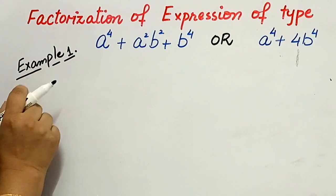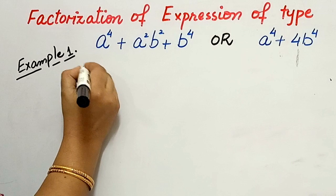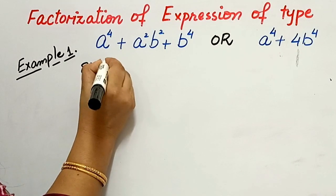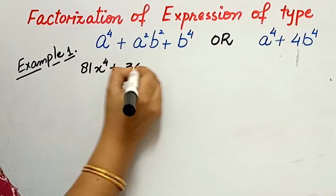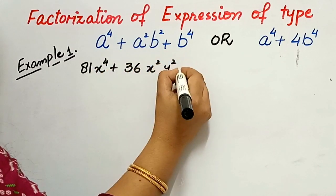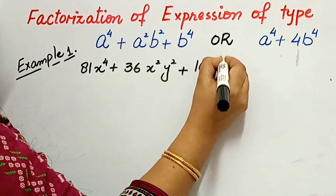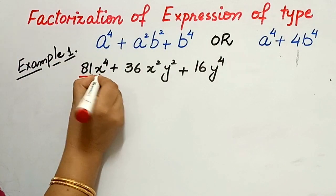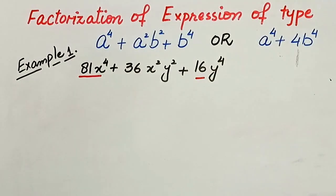Let's take Example 1: 81x⁴ + 36x²y² + 16y⁴. We can observe that the first and last terms are perfect squares.